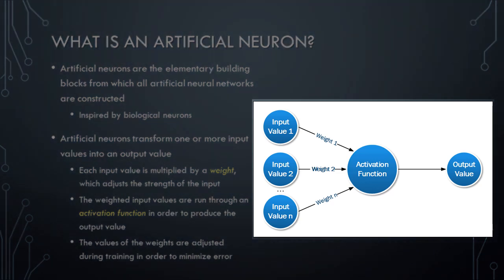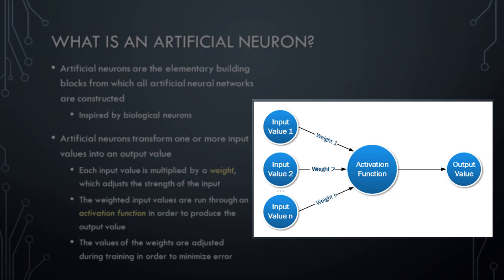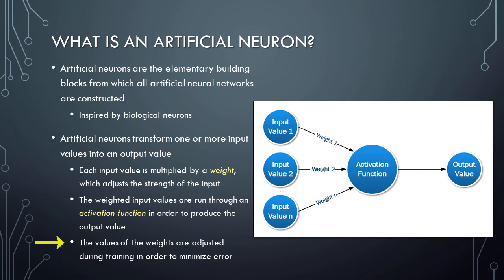As shown in this diagram, the purpose of an artificial neuron is simply to transform one or more input values into an output value. Each input value is multiplied by a weight, the effect of which is to adjust the strength of the input. For example, if the input value is 0.8 and the value of the weight is 0.5, the result after multiplying these two values together would be 0.4, meaning the weight served to reduce the strength of the input. If the weight had been greater than 1, the strength of the input would have been increased. After the weighted input values have been calculated, they are run through an activation function to produce the artificial neuron's output value. Note that the values of the weights can be adjusted during training in order to minimize error.